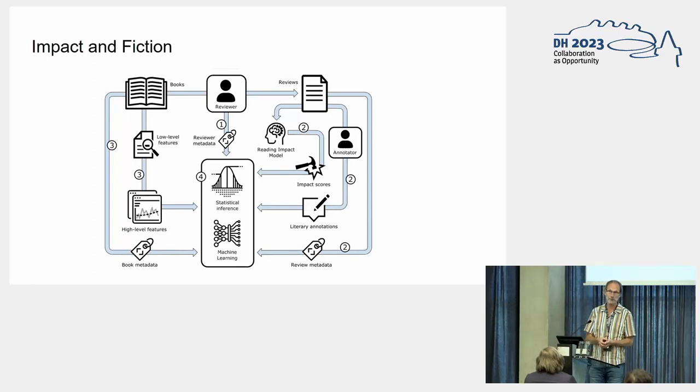For the books, we have the full texts. On full texts you can define lots of low-level measures, for instance word counts or frequencies. But what we would like to do is get at some higher-level features that are actually interesting from the perspective of reading. And we have some book metadata like genre.